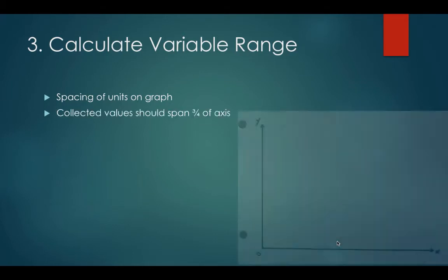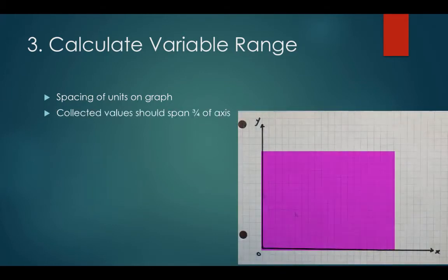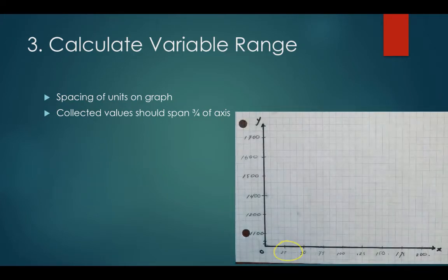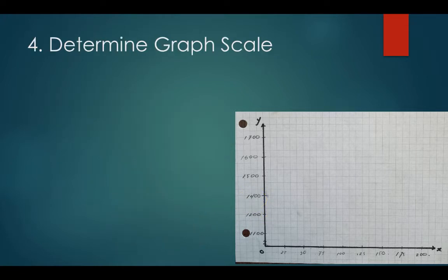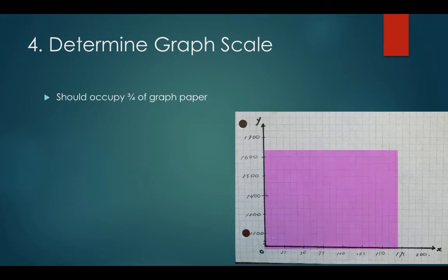We're going to plot the data so it spans about three quarters of the graph paper. So doing some simple math, I suggest that we make the melting point temperature change by increments of 25 for every three squares, while depth should increase by 100 kilometers for every two squares if we don't start from zero. Just a reminder, we're choosing these increments knowing that we'd like the data to fit about three quarters of our page.